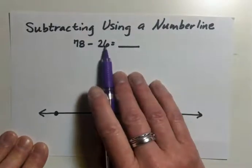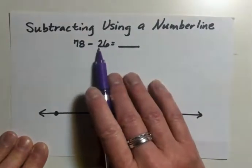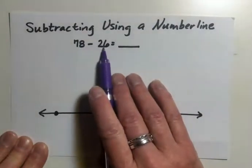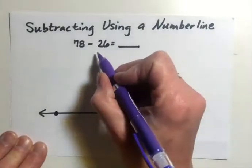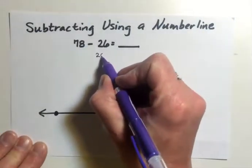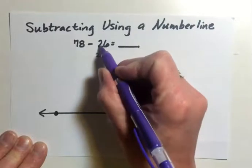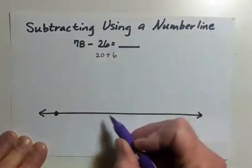What we need to do first is we need to break this number down into expanded form. Expanded form is when you say 20, there's two tens, which would be 20, plus 6.